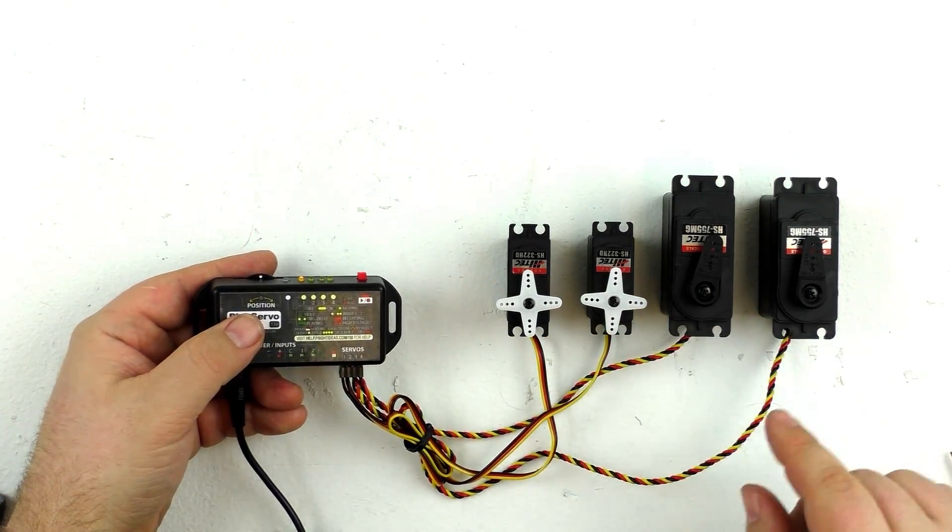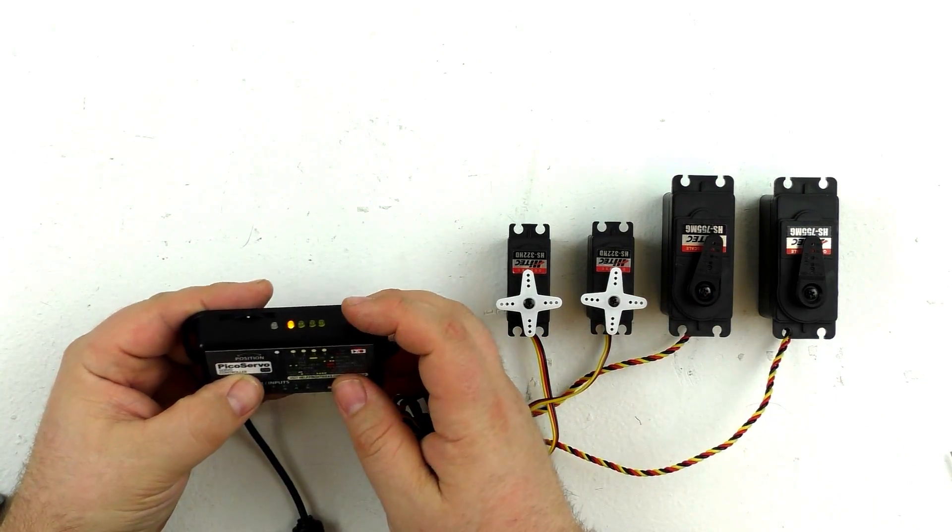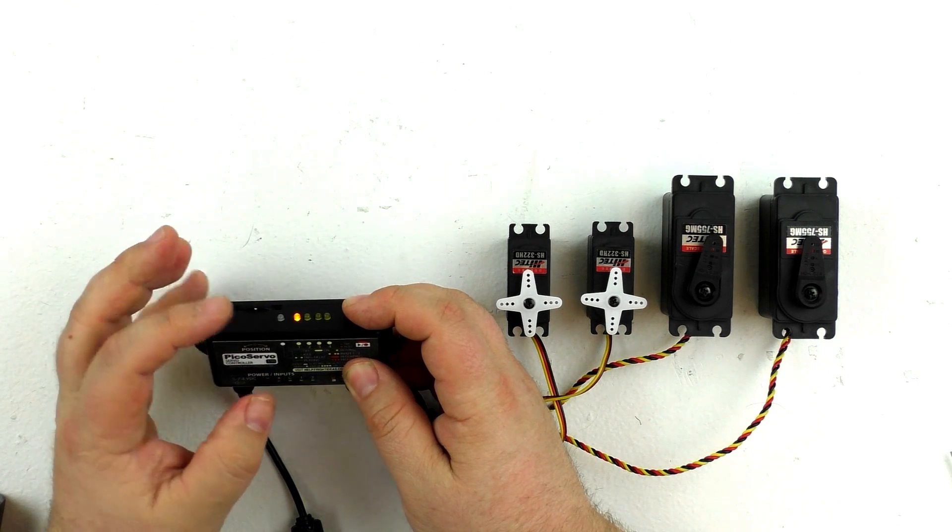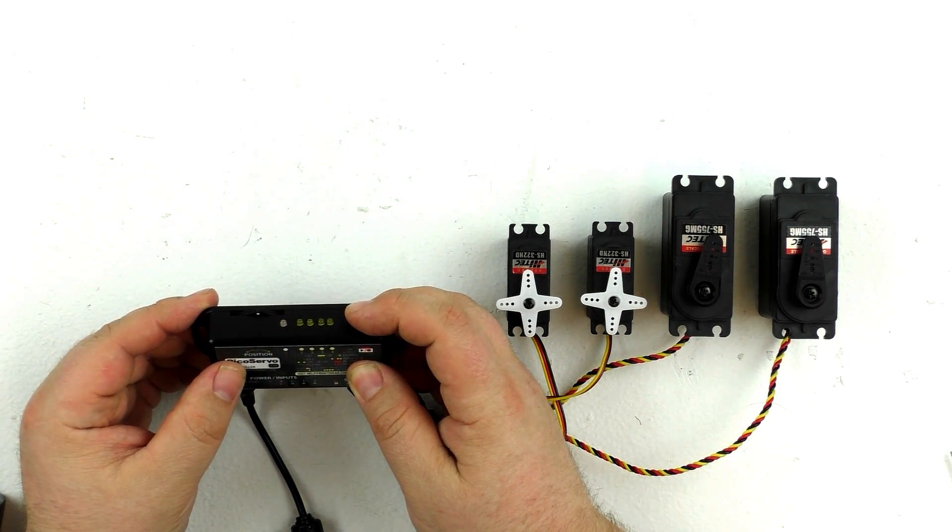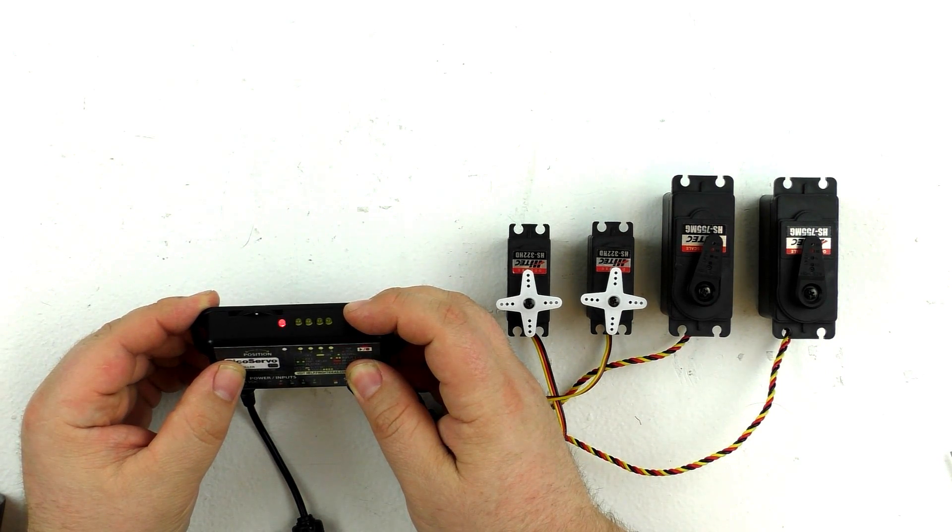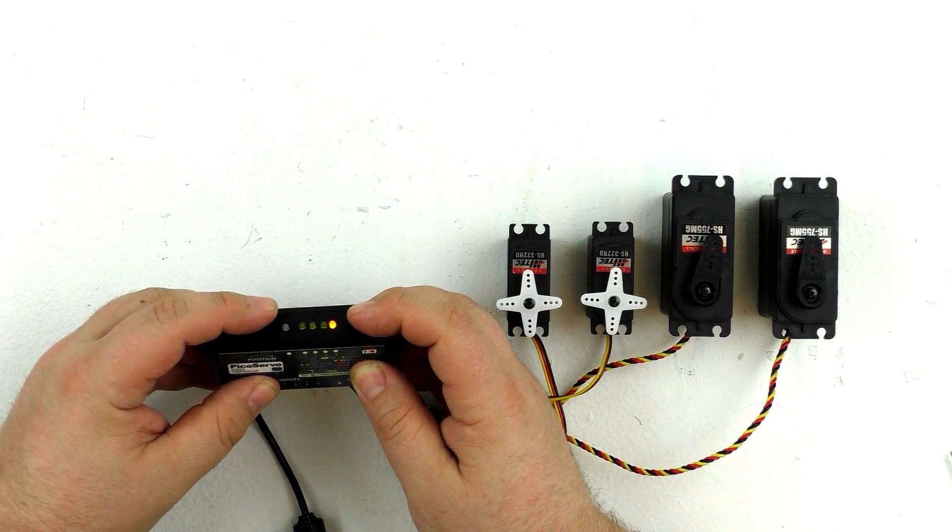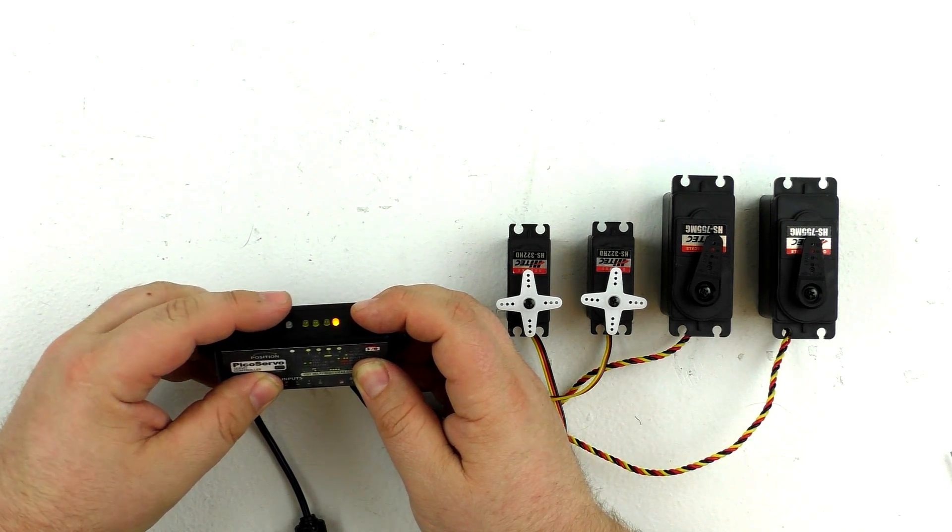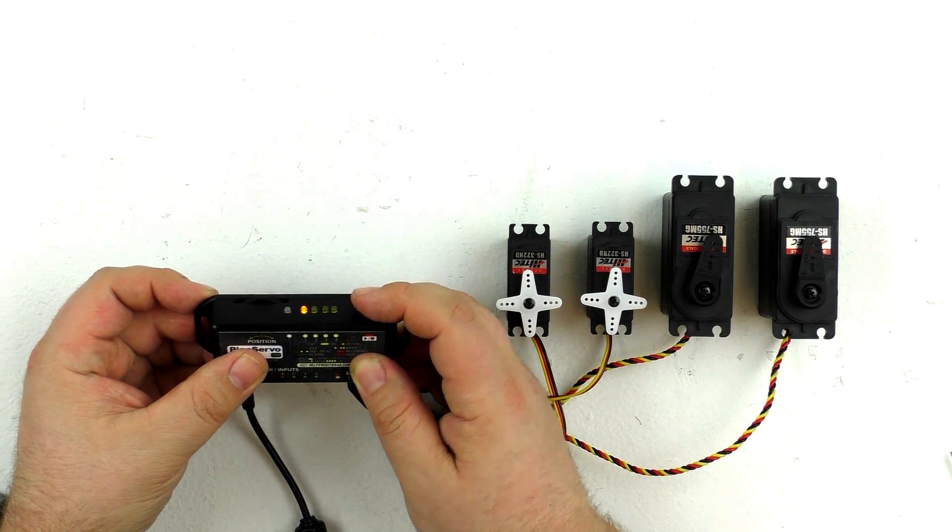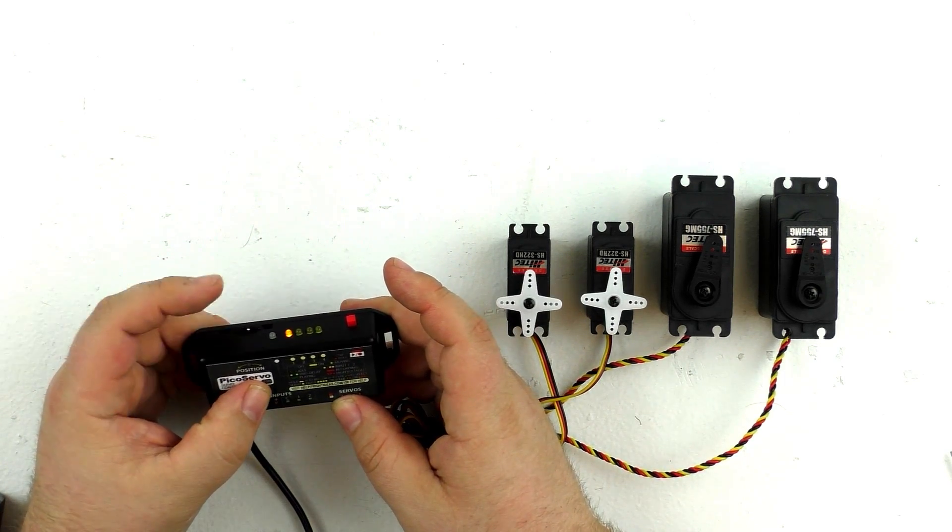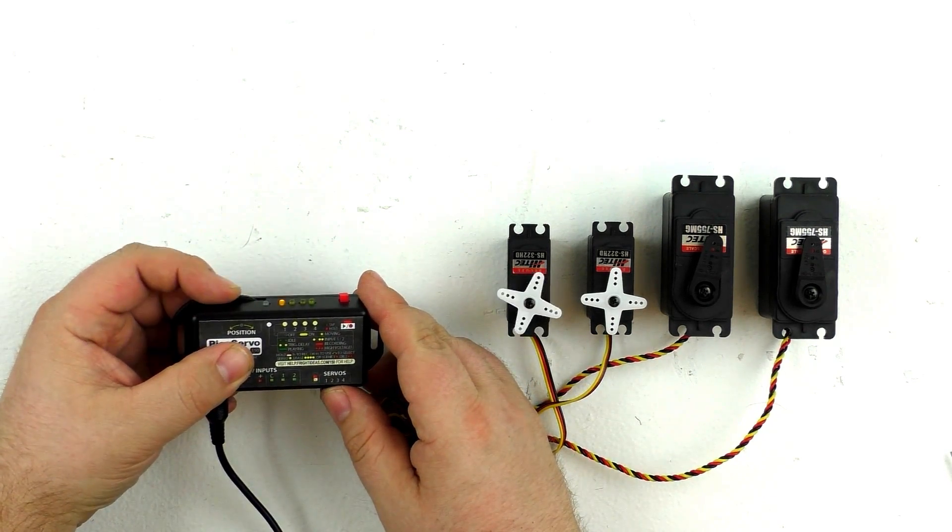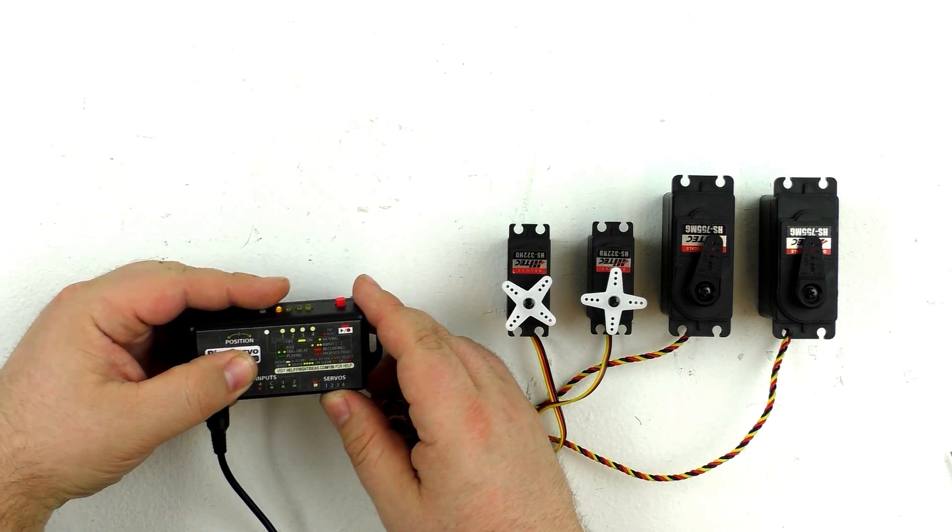The first thing we have to do is choose which servo we're going to control. To do that, we're going to hold down the red record button until the red LED stops blinking. Now we're going to keep the record button held down, and this is how we select which servo we want to control, just using the dial. We're going to start with servo one. I'm going to release the button. You see now that by turning the dial, I'm controlling servo number one.